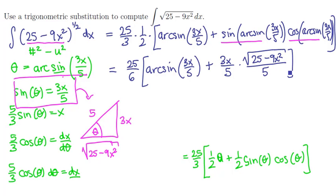So now we have an antiderivative. If we were to clean this up we have 25 sixths times the arcsine of 3x over 5 plus let's see we have 3x times the square root of 25 minus 9x squared all over 25.